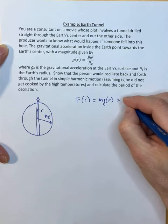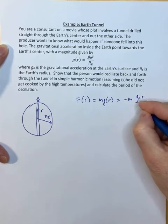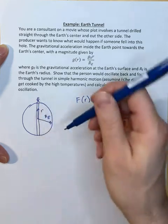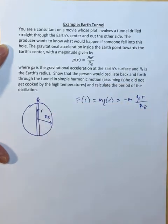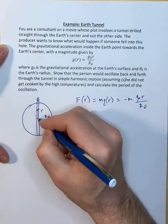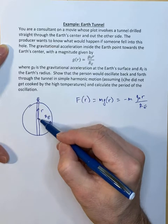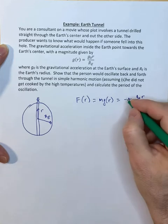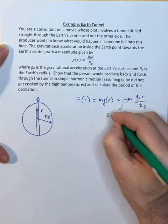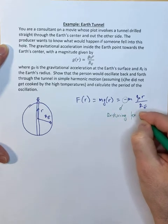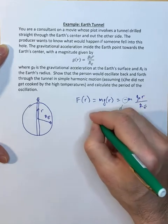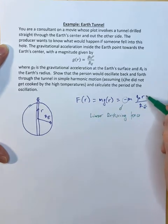So that force is going to be minus m times g₀r over rₑ. The minus sign is crucial because essentially r is pointing outwards and so the force essentially works against that direction. So if we're on the top side here of the center the force would point downwards. If we're below the center here the force actually will be pointing upwards. And so importantly this tells you that this is a restoring force. The minus sign here means it's a restoring force. And if you see here these are constants so it's a linear restoring force. It's linear in r.